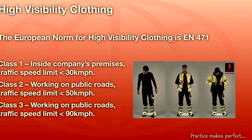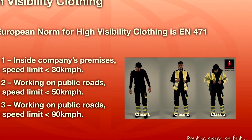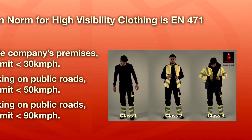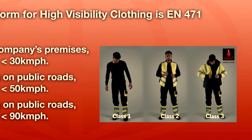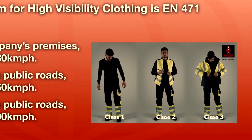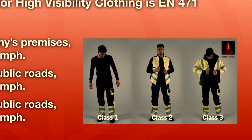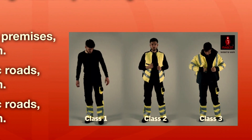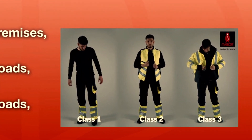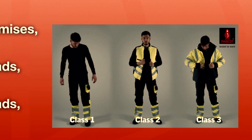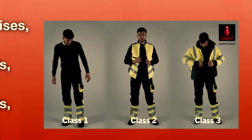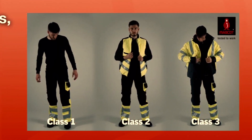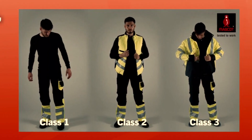High visibility clothing: the European norm for high visibility clothing is EN471. High visibility clothing is of three classes. Class one is mostly used in construction or working inside a company premises where there is a maximum speed limit of 30 km per hour. Class two is mostly used on public roads day and night where there is a maximum speed limit of 50 km per hour. Class three is mostly used on public roads day and night where there is a speed limit of 90 km per hour.